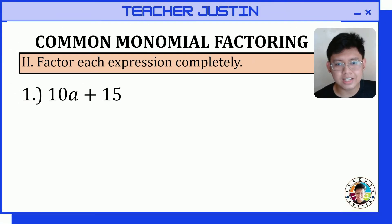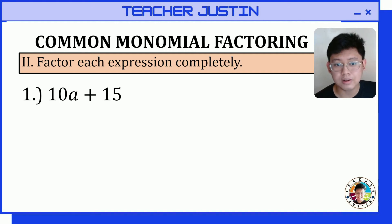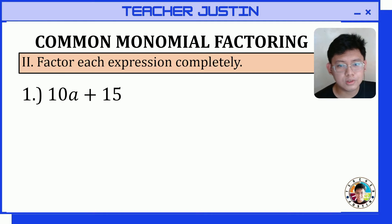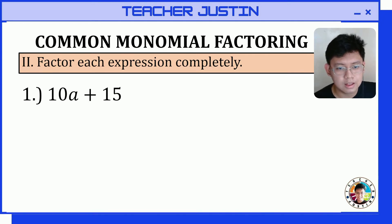Let's factor each expression completely using common monomial factoring. Let's start with our first item: 10a plus 15. In order to factor this using common monomial factoring, our first step is to get the prime factors of each term. So for 10a, let's identify its prime factors.